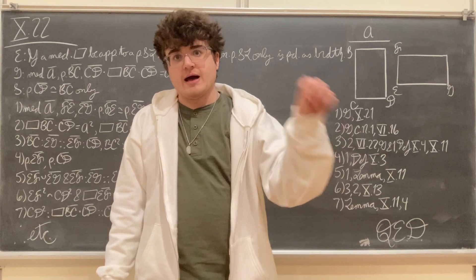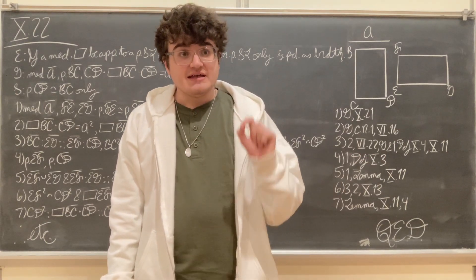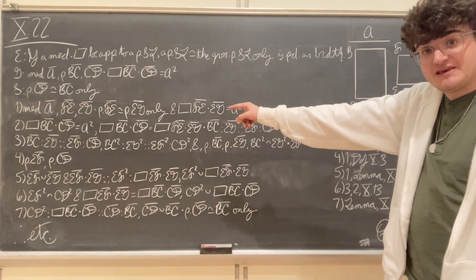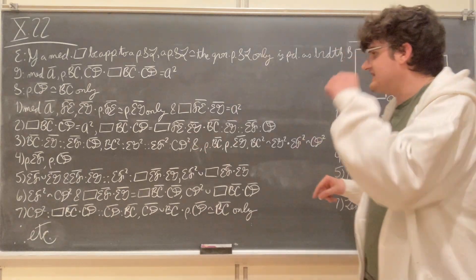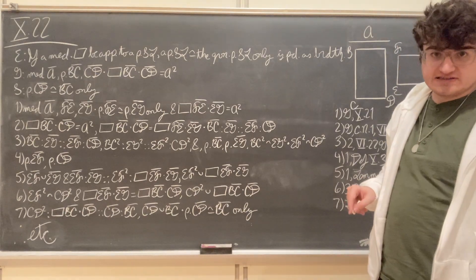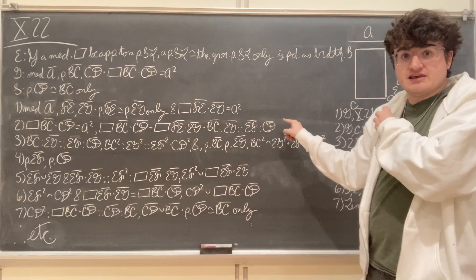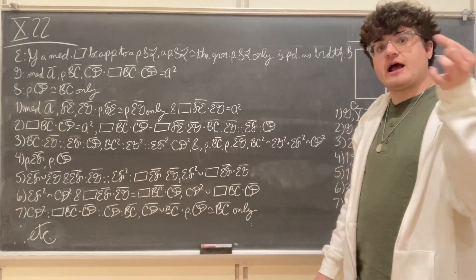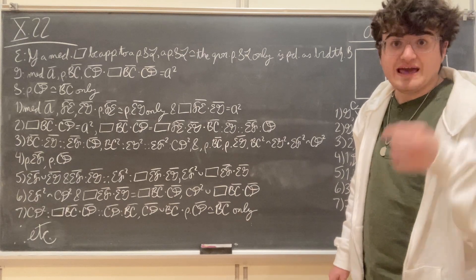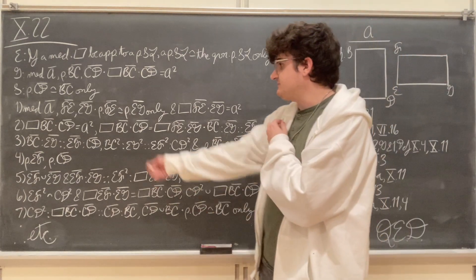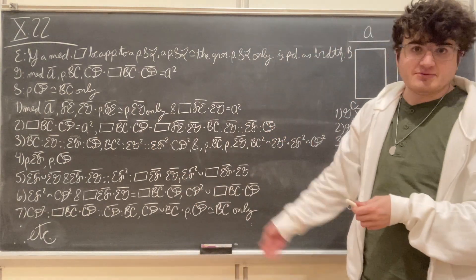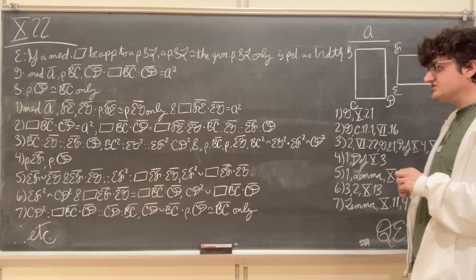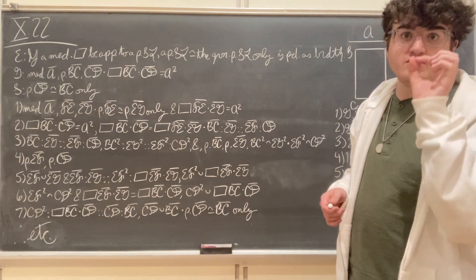But when two rectangles are equal, we know from Proposition 6.16 that among equal rectangles the sides are reciprocally proportional, so that because the rectangle contained by BC and CD equals the rectangle contained by FE and EG, we can conclude by Proposition 6.16 that BC is to EG as EF is to CD. But when four straight lines are proportional, we know that similar figures similarly described on them are also proportional. In this case our similar figures will be squares, so that because BC is to EG as EF is to CD, we know from Proposition 6.22 that BC squared is to EG squared as EF squared is to CD squared.